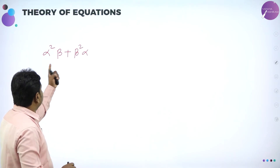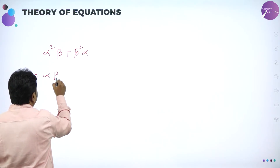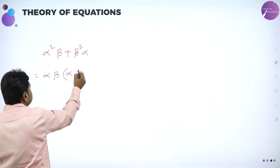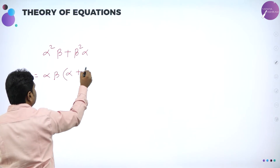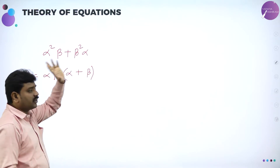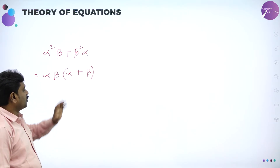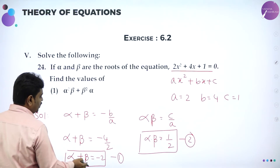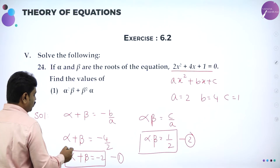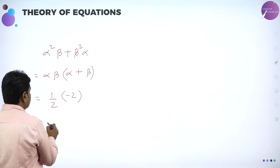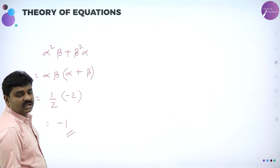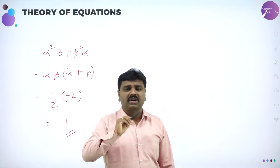Observe — we will take alpha beta common from both terms of alpha squared beta plus beta squared alpha. Taking alpha beta common: alpha is gone so one alpha is left, plus one beta is left. So alpha squared beta plus beta squared alpha can be written as alpha beta into alpha plus beta. Alpha beta value is product of roots, which is 1 by 2. In the place of alpha beta put 1 by 2, and alpha plus beta is minus 2. So it becomes 1 by 2 into minus 2 equals minus 1. Here again we use sum of the roots and product of roots.